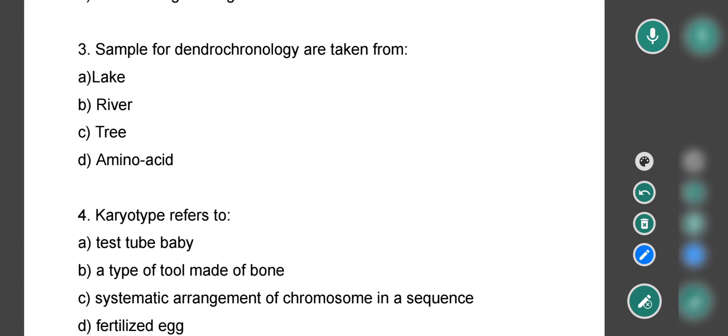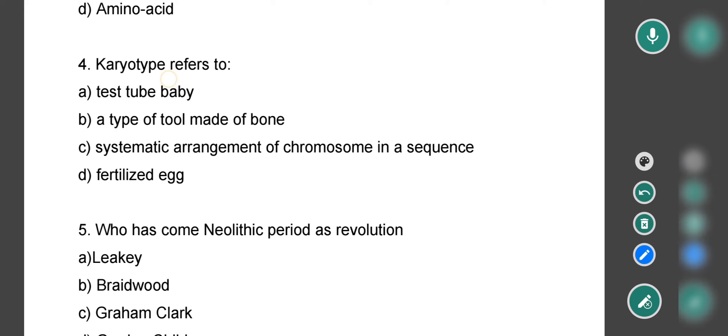Next question asks what karyotype refers to. Options are: test tube, a type of tool made up of bone, systematic arrangement of chromosomes in a sequence, or fertilized egg. The correct option is option C, that is systematic arrangement of chromosomes in a sequence. This is karyotype analysis.